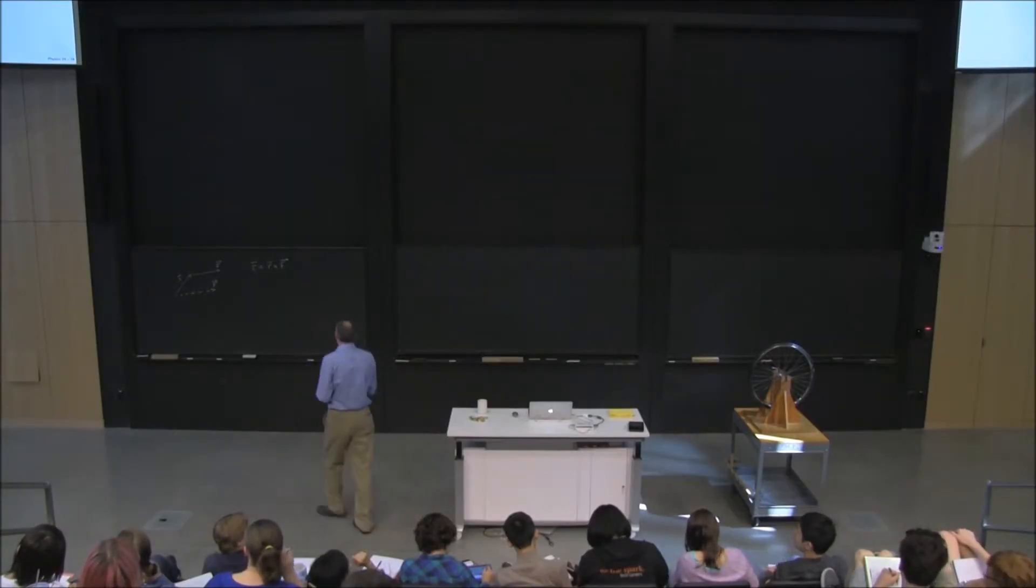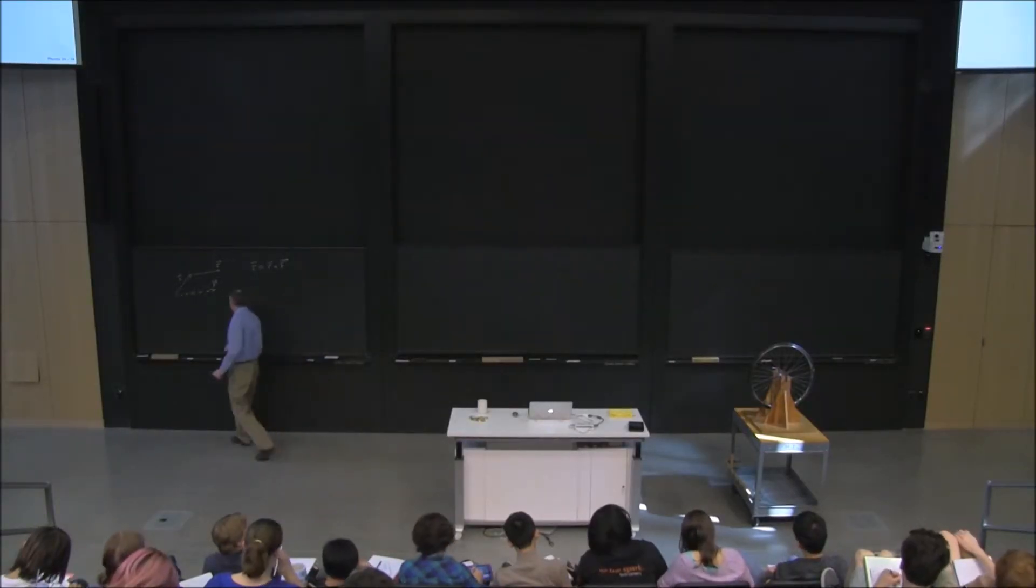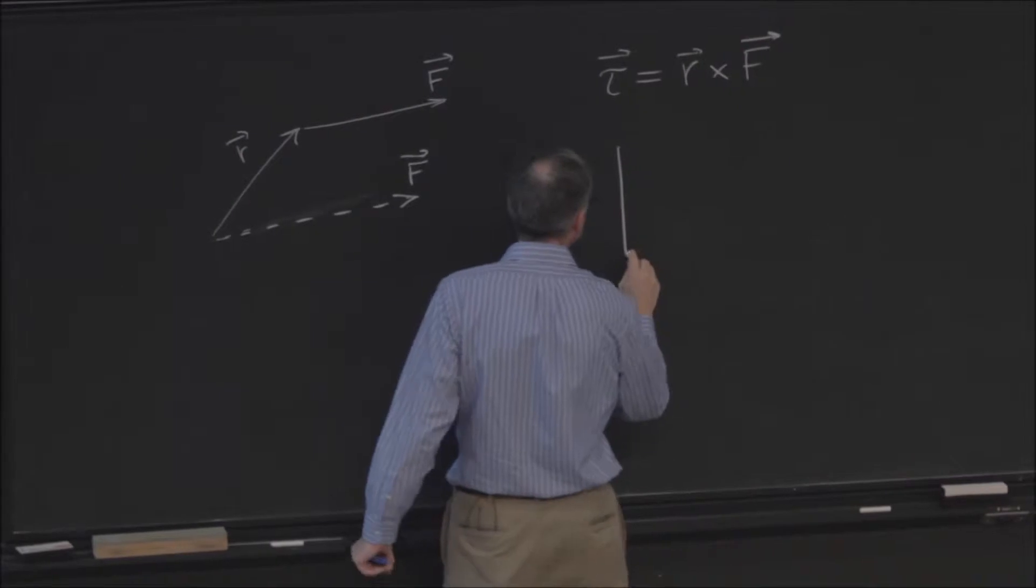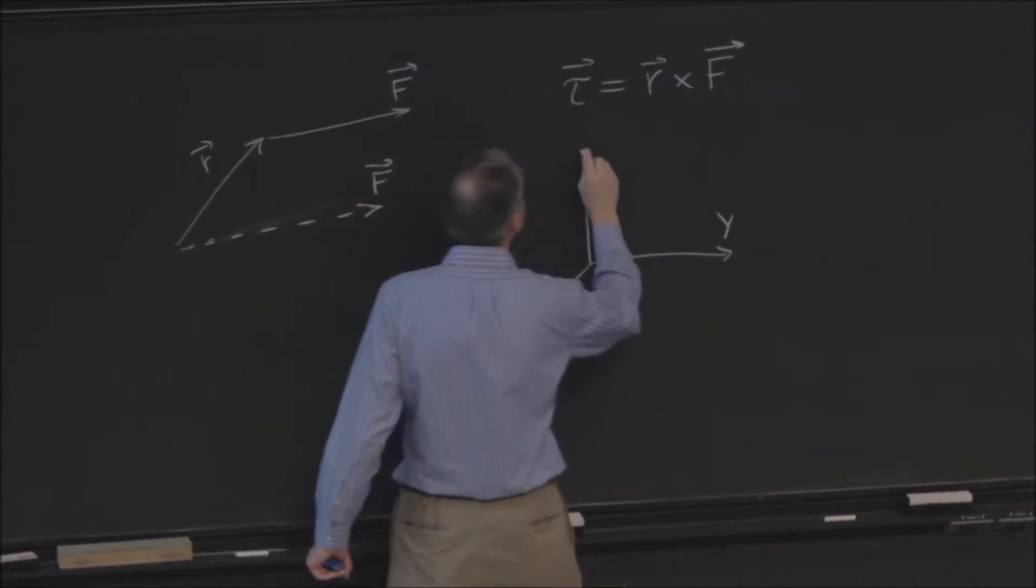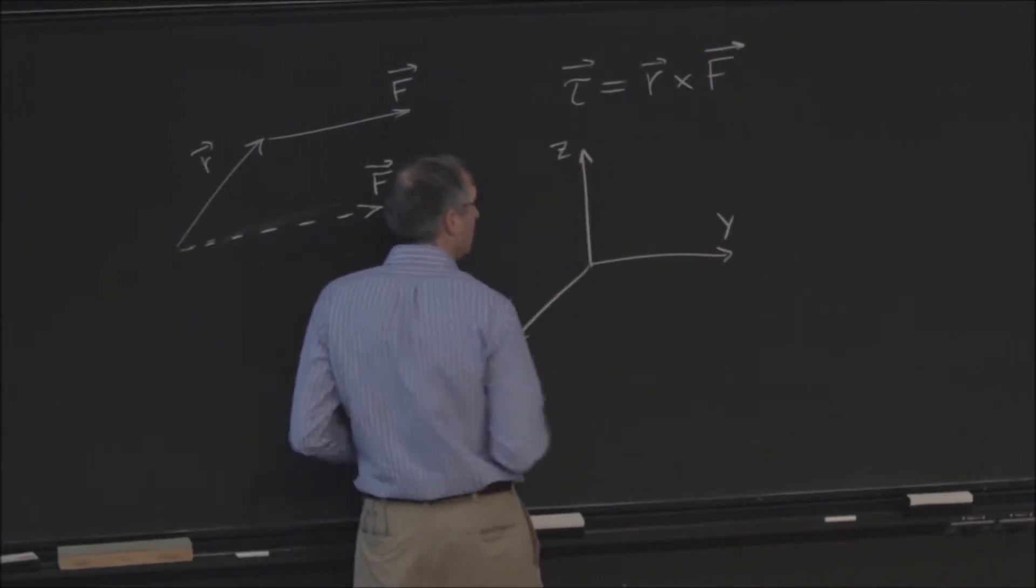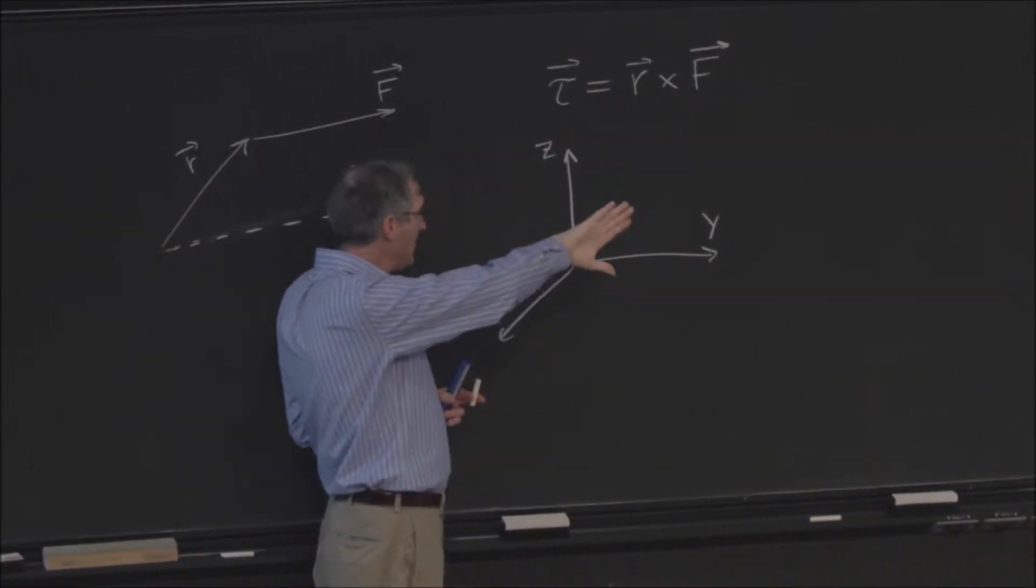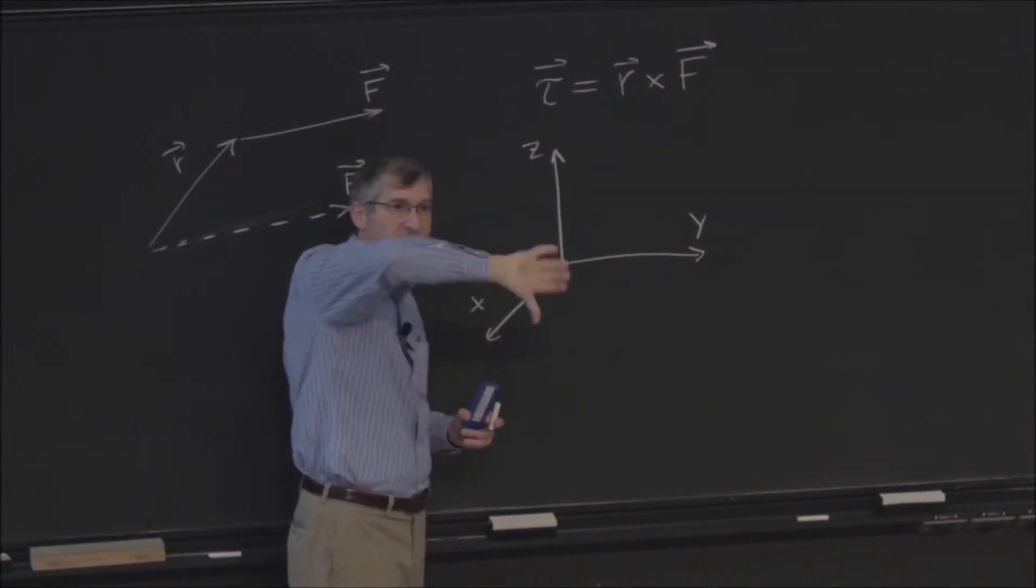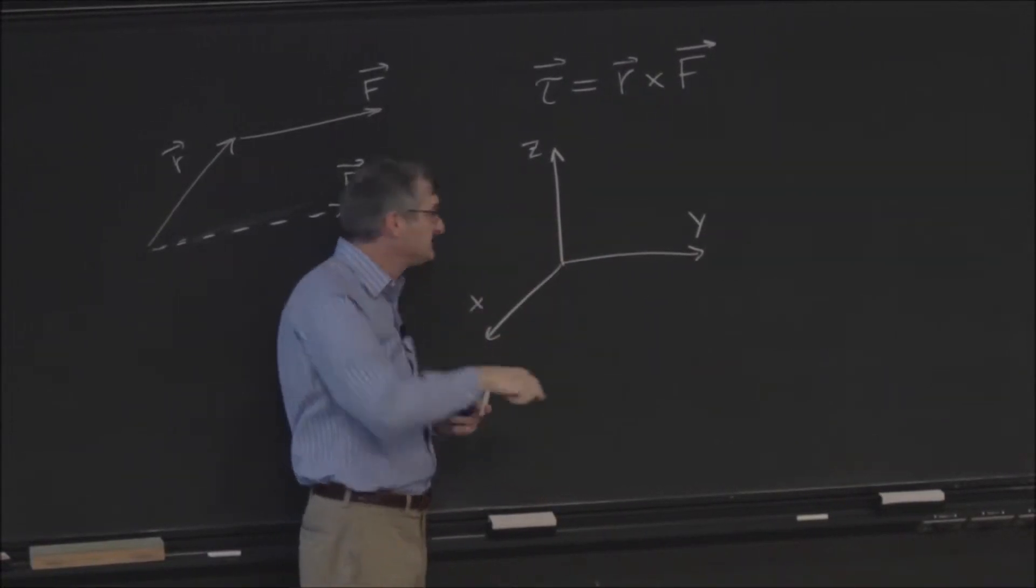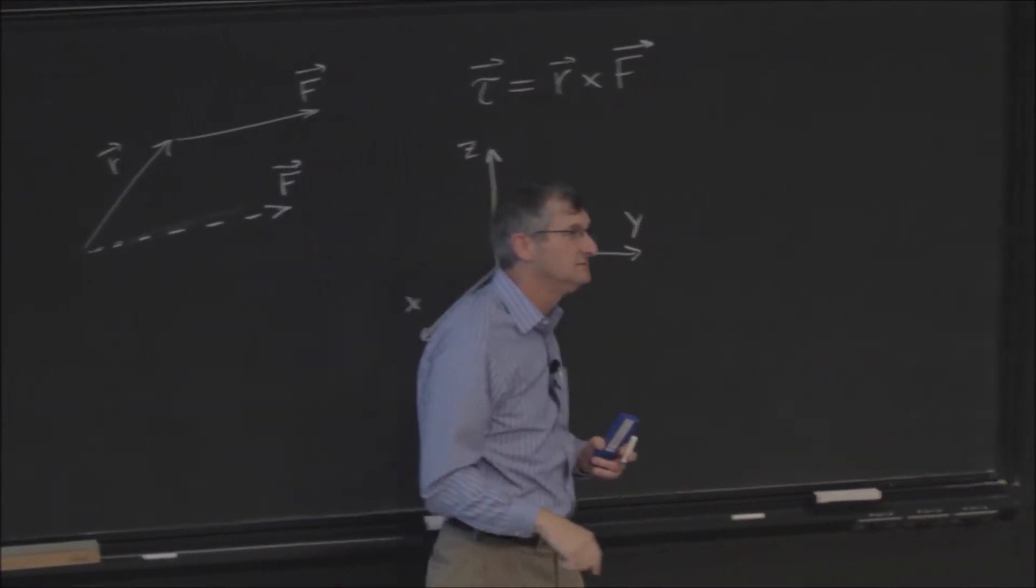So y crossed into x. If I have y and then I cross that into x, that's going to point my thumb down. So that's opposite to z.